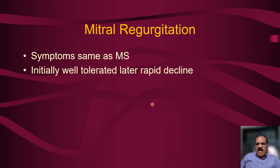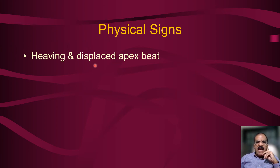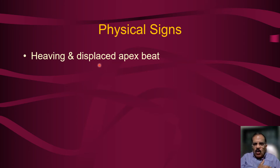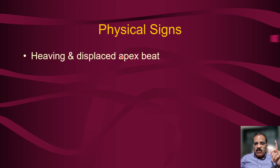You cannot really make a definitive diagnosis of mitral regurgitation on history alone — you can suspect it, but examination is needed to make a diagnosis. Physical signs include a heaving and displaced apex beat. Heaving means when you put your hand on the precordium, you feel as if the heart is lifting off the chest wall with every systole — due to increased stroke volume. The apex beat is displaced laterally and downward because of left ventricular dilatation. This differentiates it from mitral stenosis, where the apex beat is tapping and not displaced.